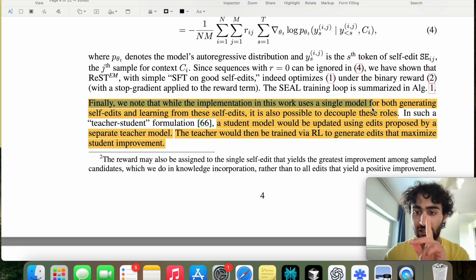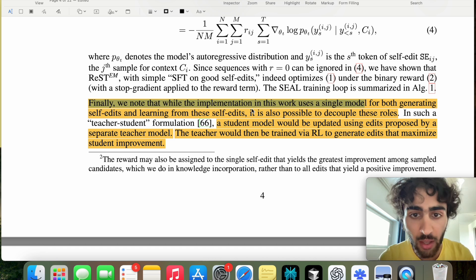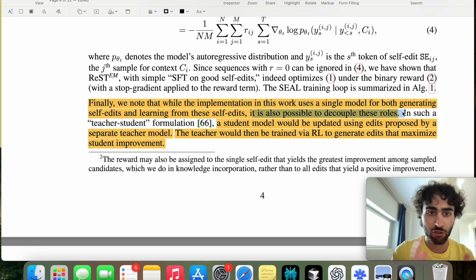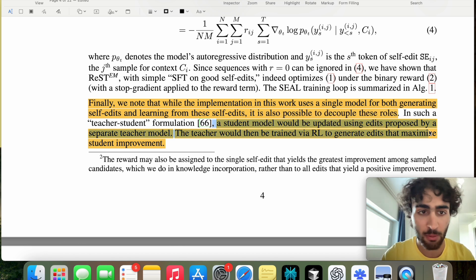We note that while this implementation uses just a single model for both generating the self-edits and learning from the self-edits, this is what we refer to as the double loop. So generating self-edits is the inner loop. And then learning from the self-edits with the reinforcement learning policy is the external loop. They're saying that you could also have a teacher doing one loop and then a student on another. So a student model would be updated using edits proposed by a separate teacher model. And the teacher would be trained via reinforcement learning to generate edits that maximize student improvement.